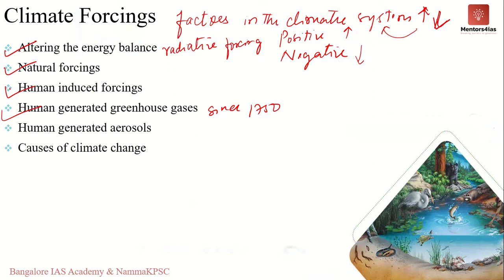Human-generated aerosols: burning fossil fuels also adds aerosols to the atmosphere. Aerosols are tiny particles composed of many things including water, ice, ash, mineral dust, or acidic droplets. Aerosols can deflect the sun's energy and impact the formation and lifetime of clouds. Aerosols are a negative forcing — that is, they have a cooling effect.